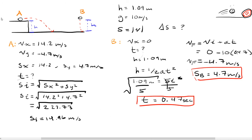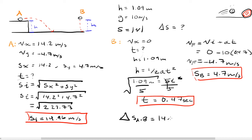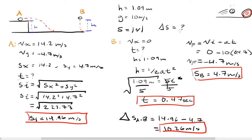All right, we're nearly there — home stretch. Let's box up this answer. So to find the difference in speed between A and B, it's going to be 14.96 meters per second minus 4.7 meters per second, and that is going to equal 10.26 meters per second. And that is our final answer — the difference in speed — which is what we're looking for. So we're going to go ahead and plug this into the website and see how it turned out.